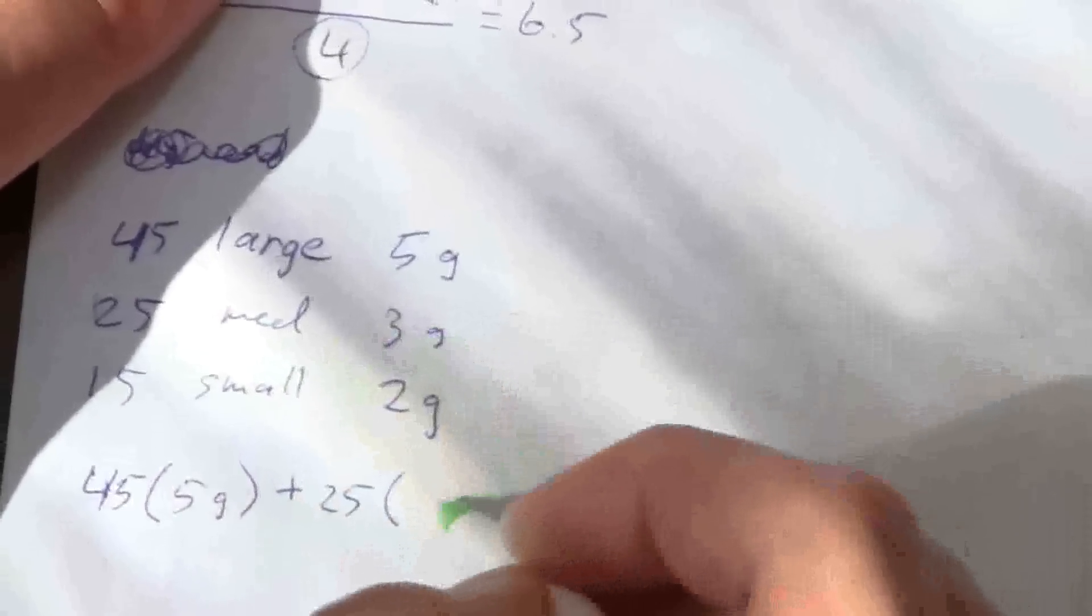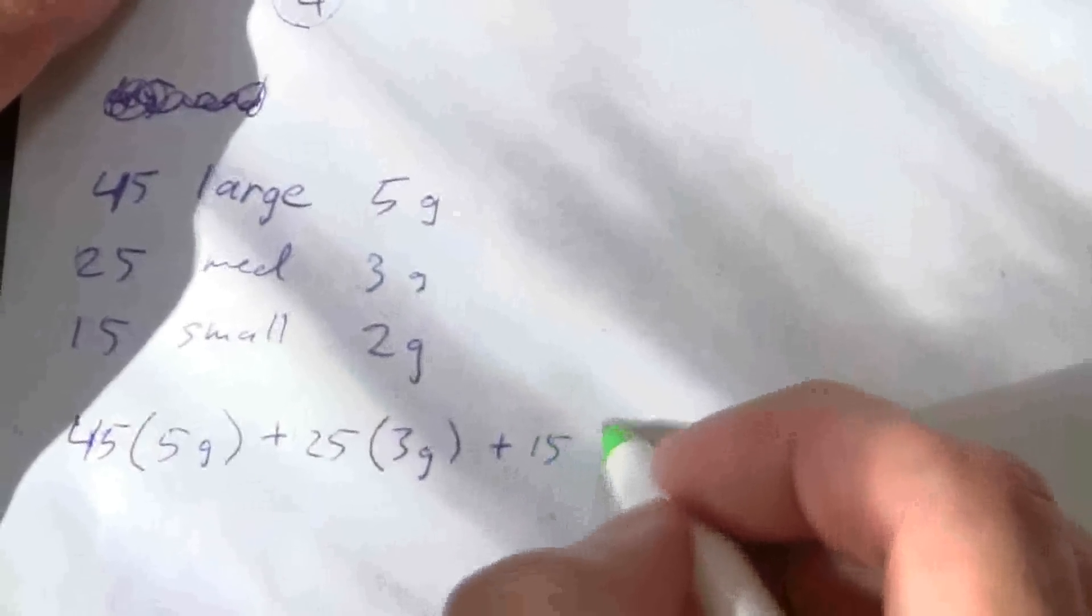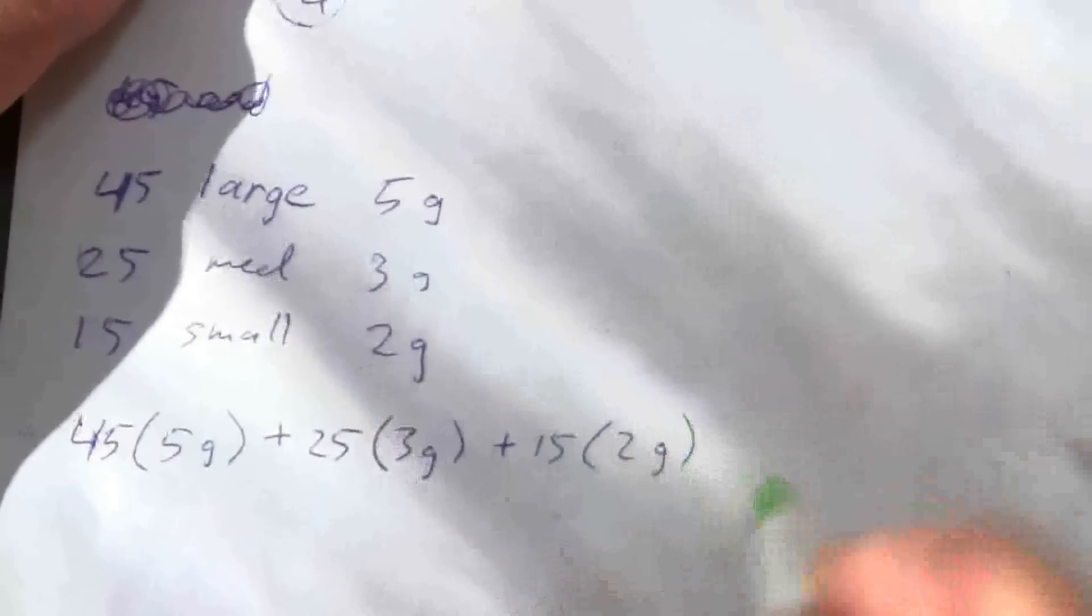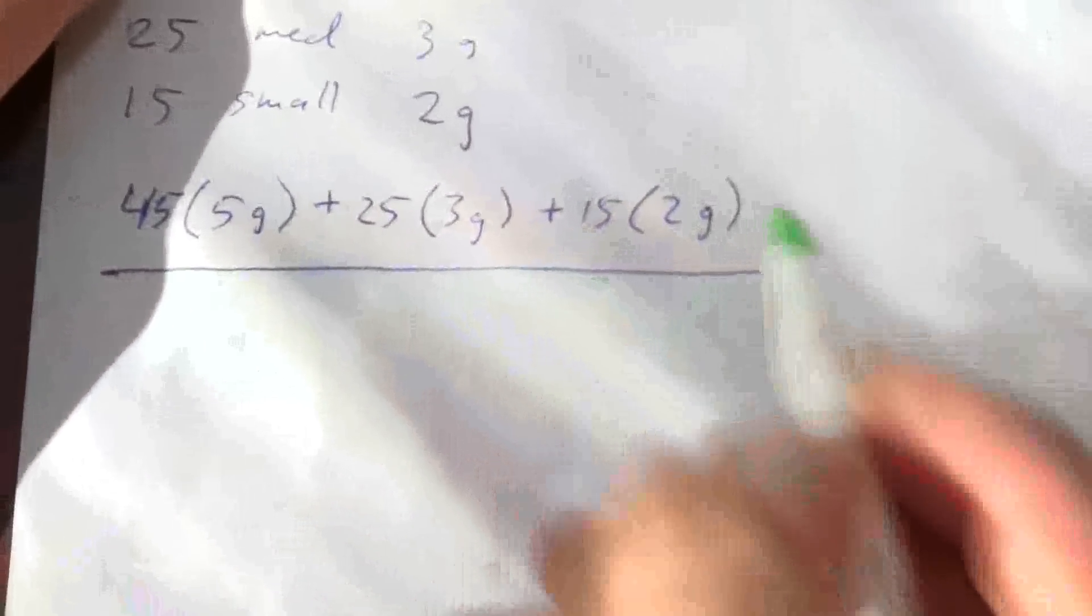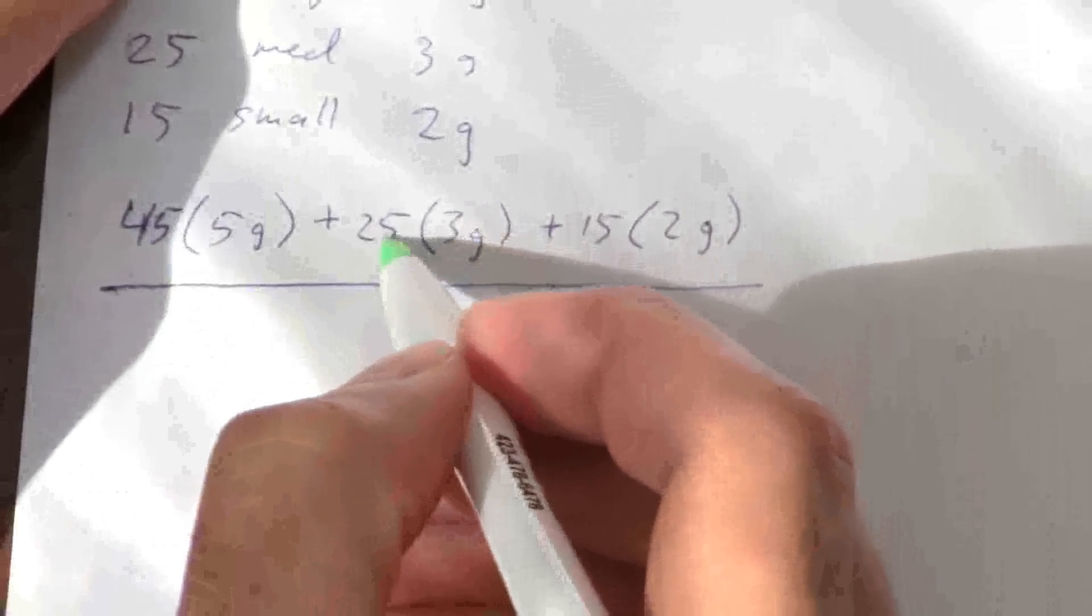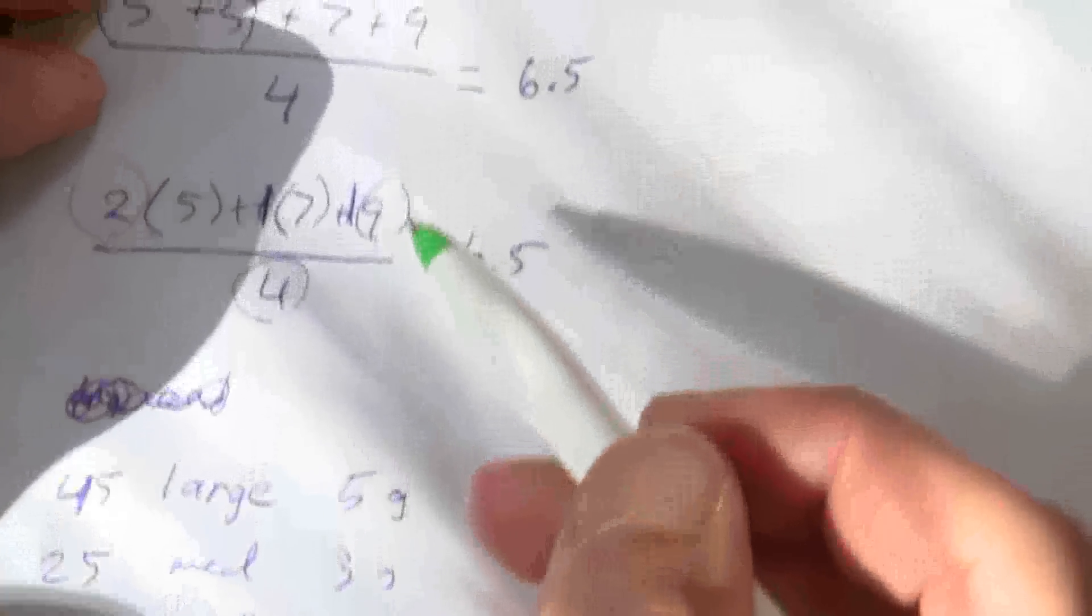So 45 of the 5 grams plus 25 of the 3 grams, the medium marbles, and 15 of the light marbles, the 2 gram marbles. So now I do this and I divide by the total weight. It's the same thing, it's just an average.